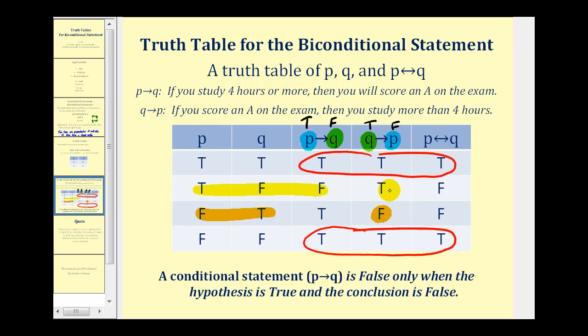The other two rows, we have false true and true false. And again, they both have to be true in order for the biconditional statement to be true.